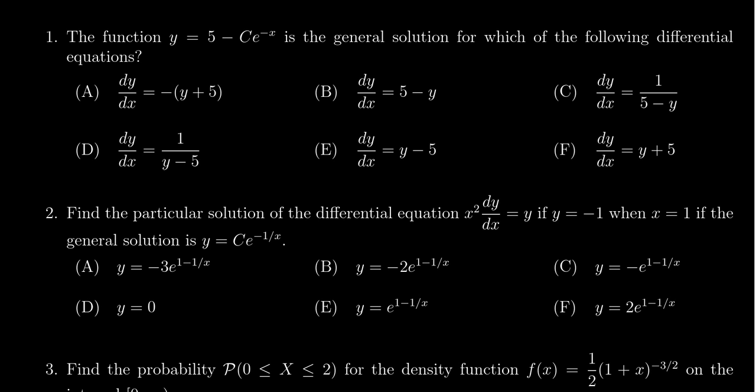Computing the derivative here, y prime is equal to - well, you take the derivative of 5, it's going to go to 0. Derivative of e to the x, by the chain rule, a negative sign is going to come out, so you're going to get a positive C e to the negative x.